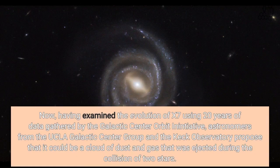Now, having examined the evolution of X-7 using 20 years of data gathered by the Galactic Center Orbit Initiative, astronomers from the UCLA Galactic Center Group and the Keck Observatory proposed that it could be a cloud of dust and gas that was ejected during the collision of two stars.